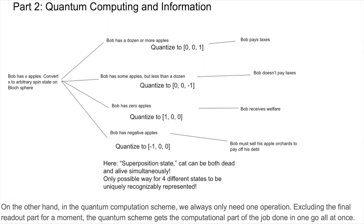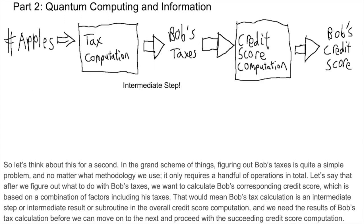On the other hand, in the quantum computation scheme, we always only need one operation. Excluding the final readout part for a moment, the quantum scheme gets the computational part of the job done in one go all at once. So let's think about this for a second. In the grand scheme of things, figuring out Bob's taxes is quite a simple problem, and no matter what methodology we use, it only requires a handful of operations in total.